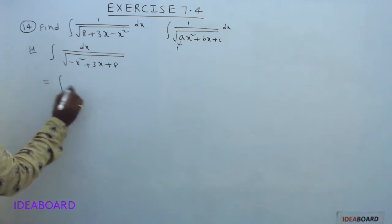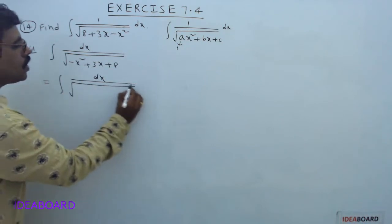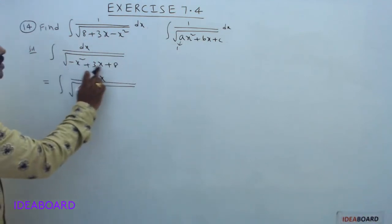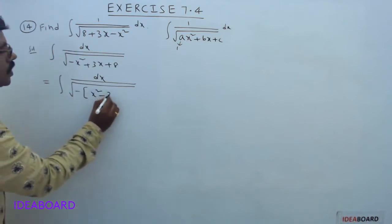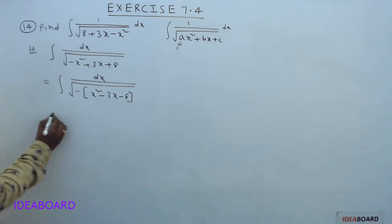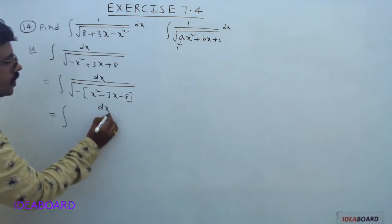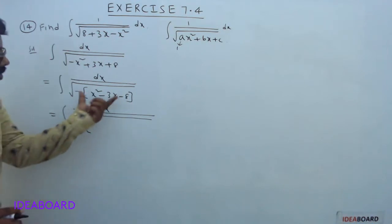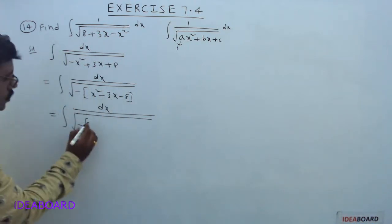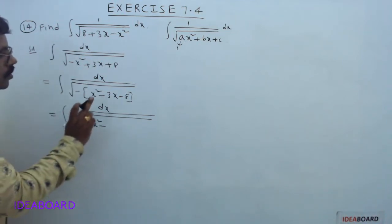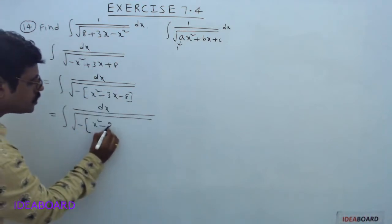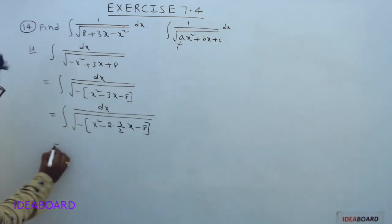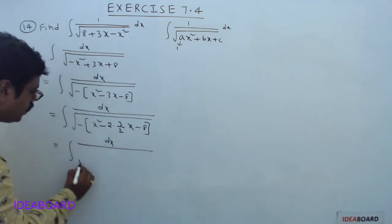Step 1: make the x² coefficient unity. Take minus 1 common from the three terms — this gives us minus of (x² minus 3x minus 8). So this becomes integral dx divided by square root of minus times (x² minus 2 times (3/2) times x minus 8), where we have multiplied and divided by 2 in the second term.